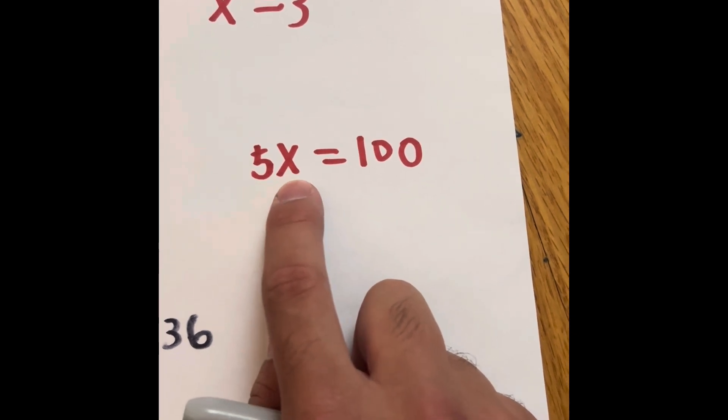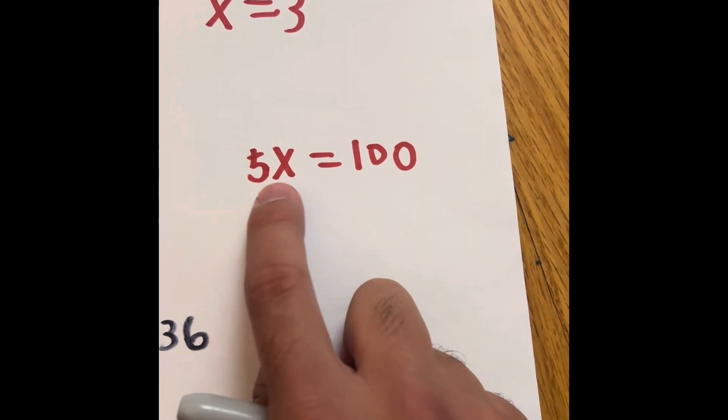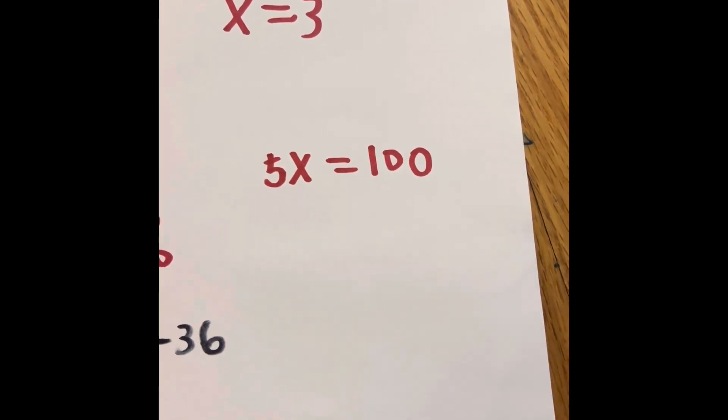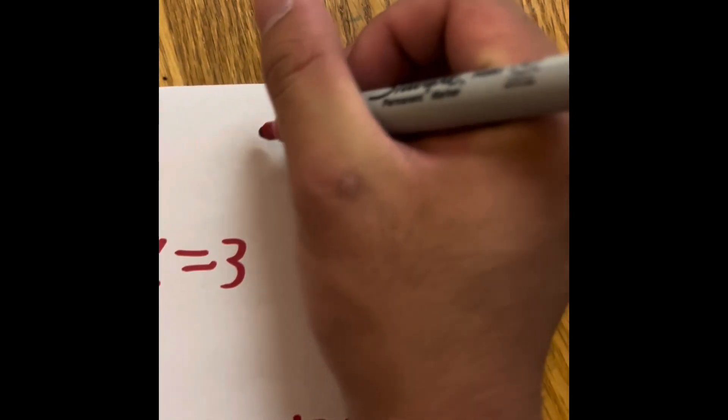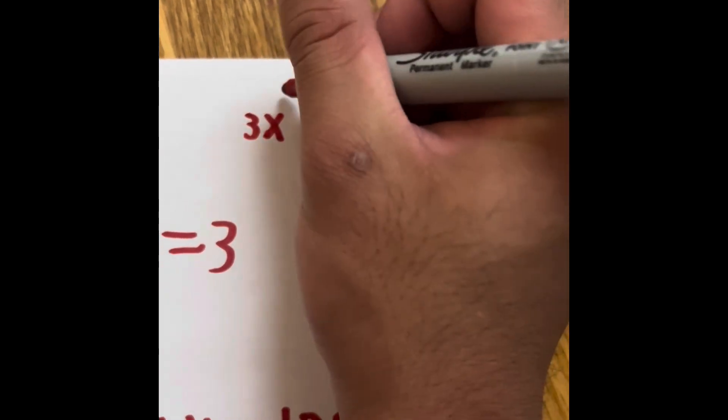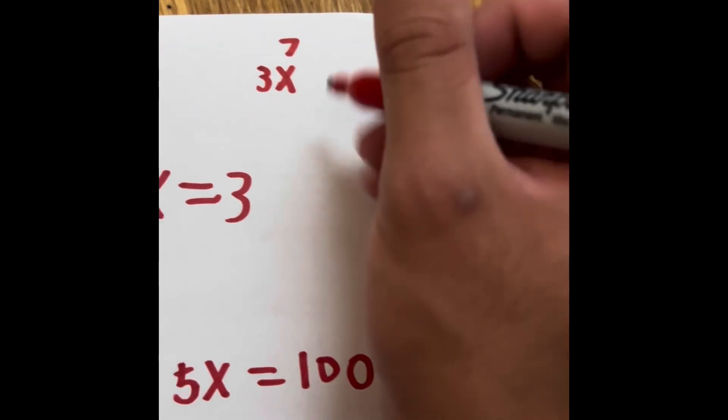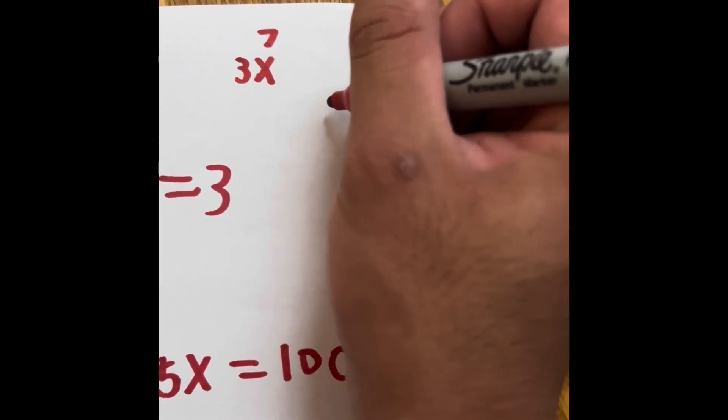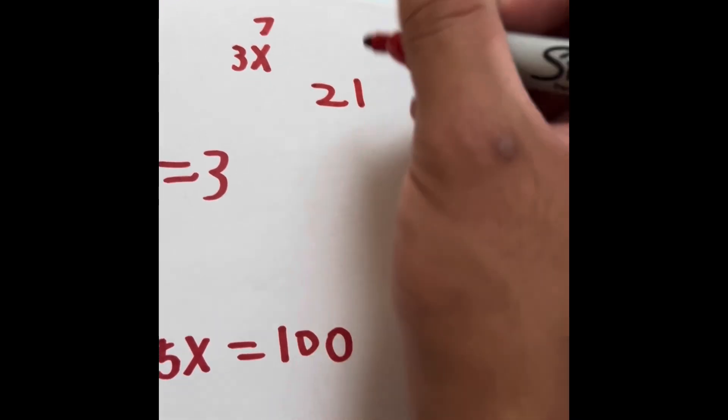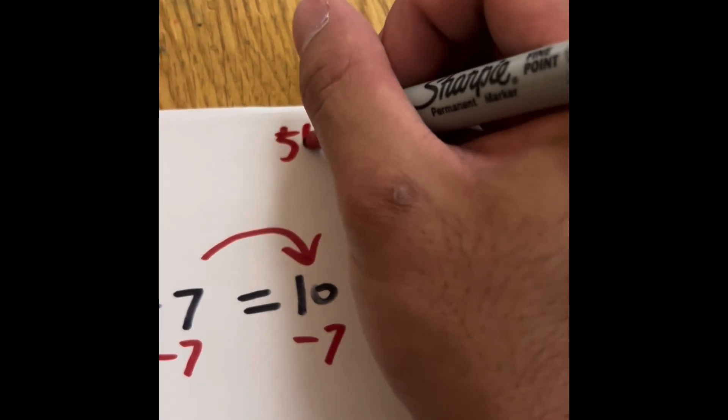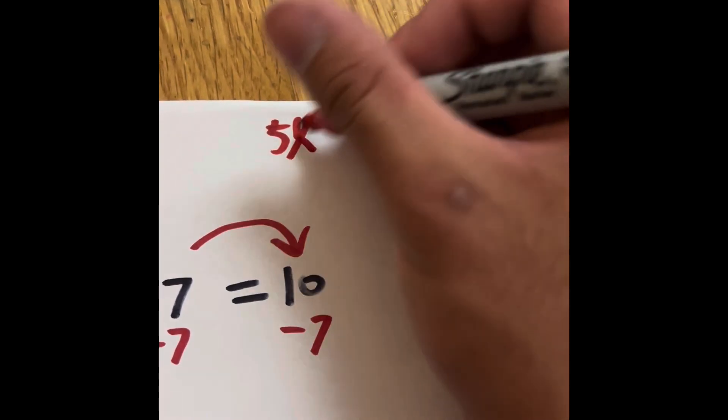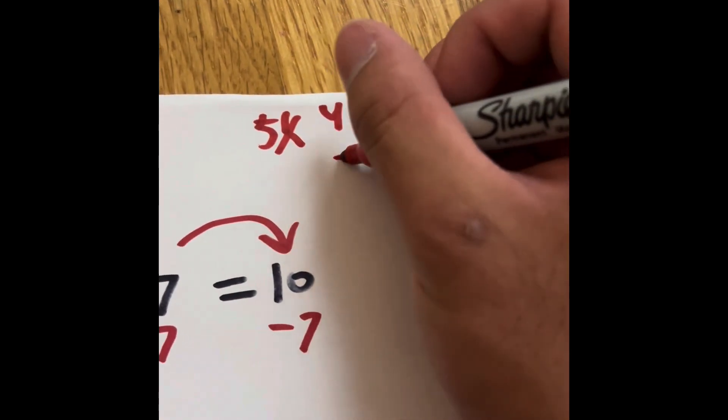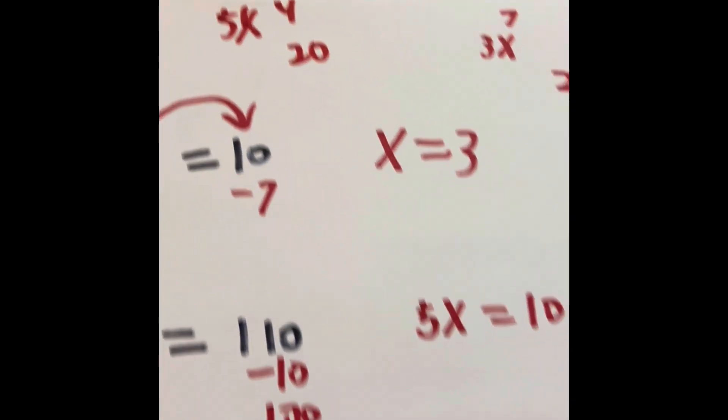If I put a number in for x, the coefficient would tell that variable to multiply itself by the coefficient. If I put 3x and I put 7 in for x, it's going to be 3 times 7 equals 21. Or if I put 5x and put 4, then 5 times 4 is 20.